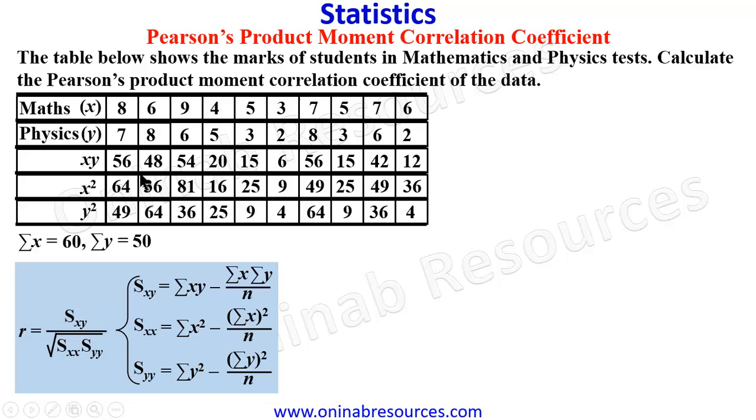So the next thing is XY. So Sigma XY, summing up all these scores in this row, we have 324.